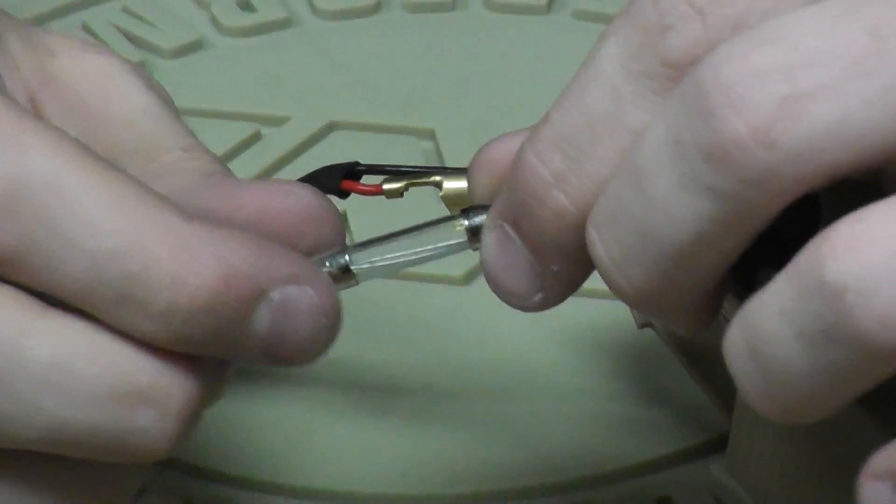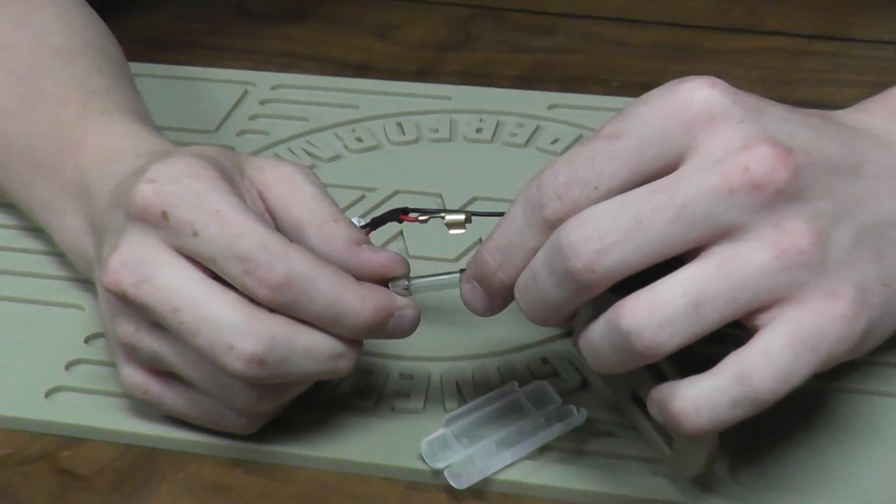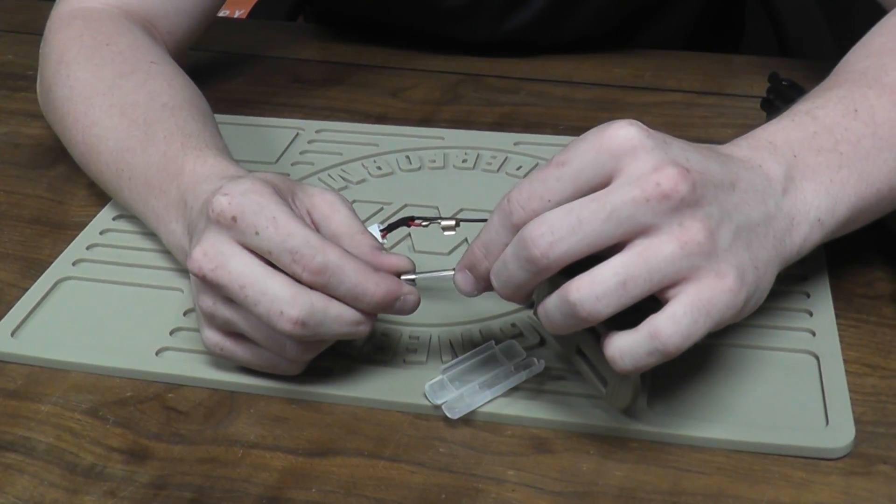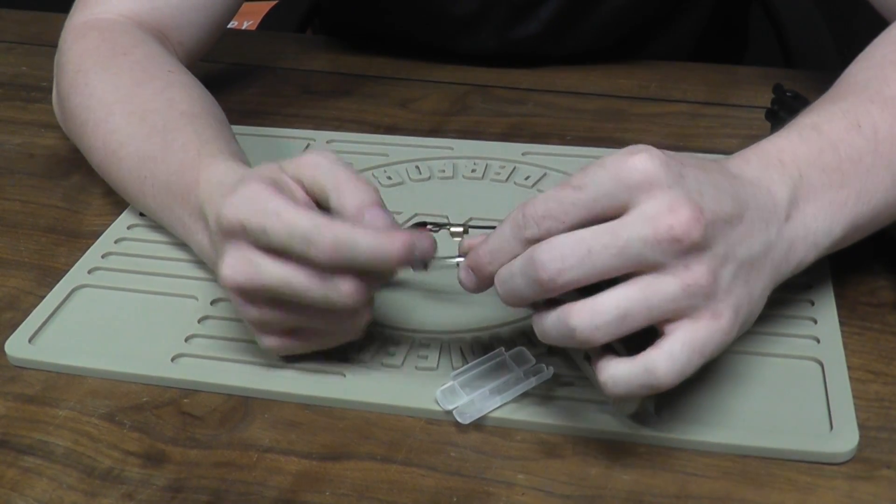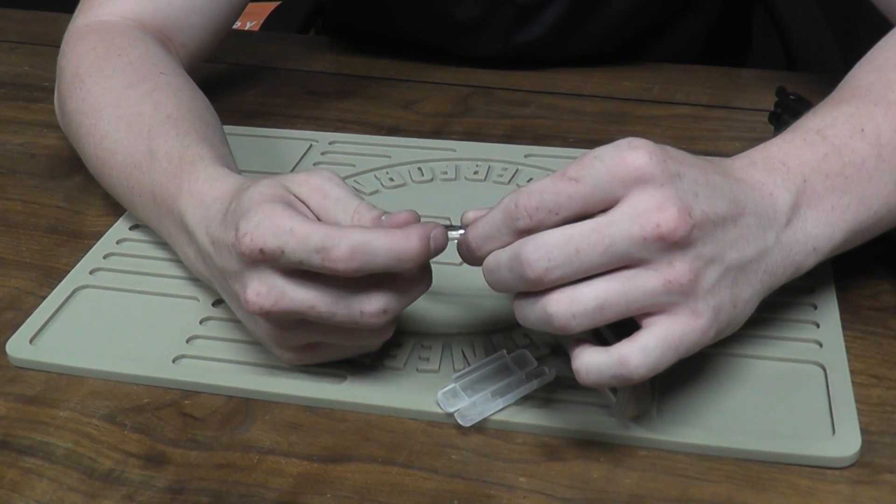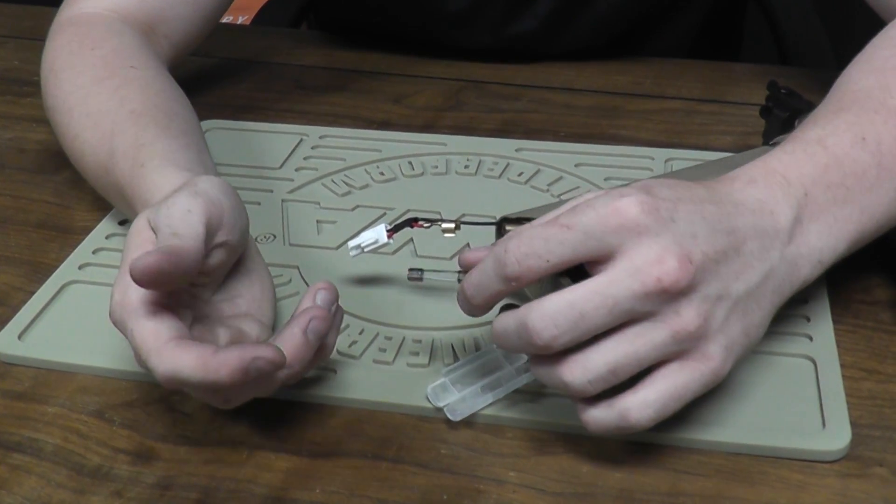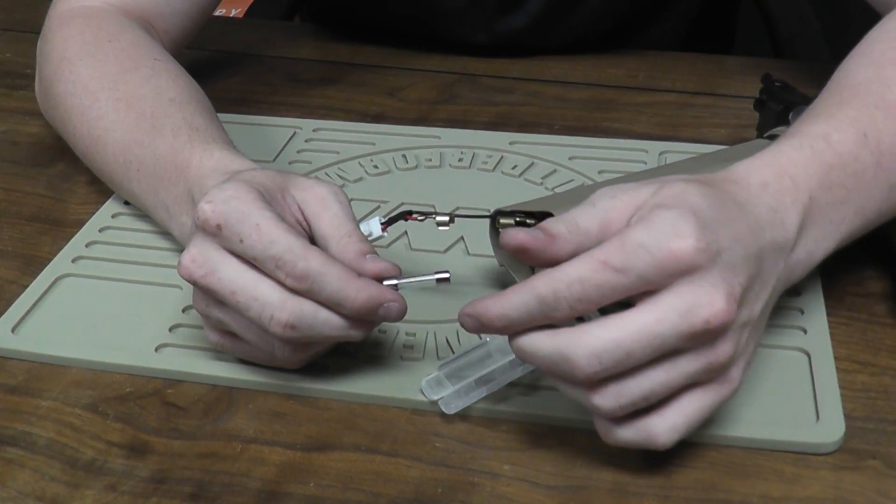The fuses are there to prevent damage from shorts, damage from things like that, or surges and whatnot. These will pop, essentially. That means it'll break that little bridge there. Once that happens, the gun will not respond. That's to protect it, like I said, from some kind of surge.